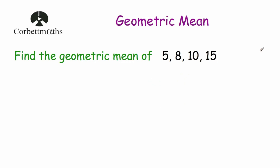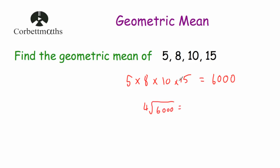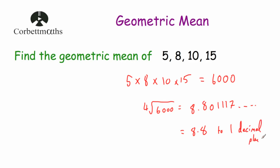Our next question asks us to find the geometric mean of 5, 8, 10 and 15. So we're going to multiply the numbers together: 5, 8, 10 and 15. When we do that, we get 6,000. Then we take the fourth root of 6,000, and when we do that we get 8.801117 and so on. Rounding that to one decimal place, that's 8.8. So the geometric mean of 5, 8, 10 and 15 is 8.8 to one decimal place.